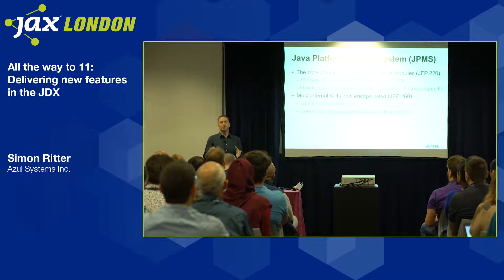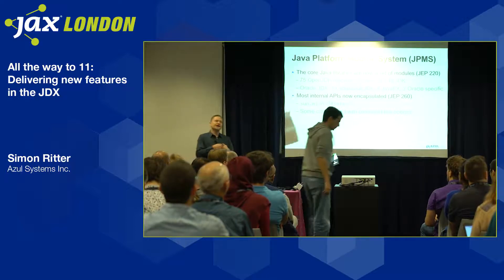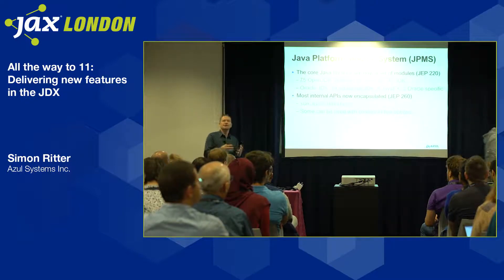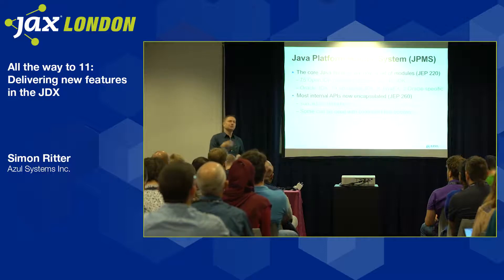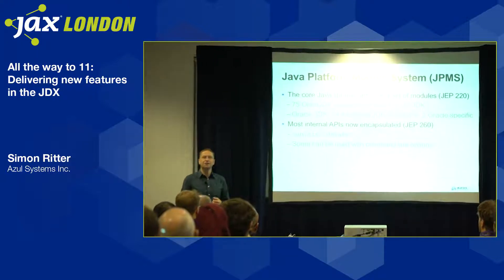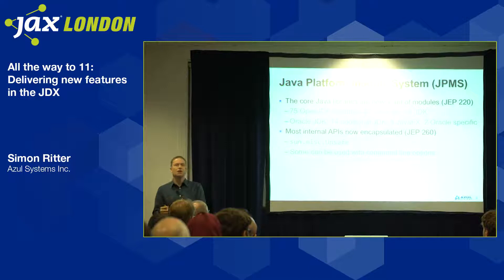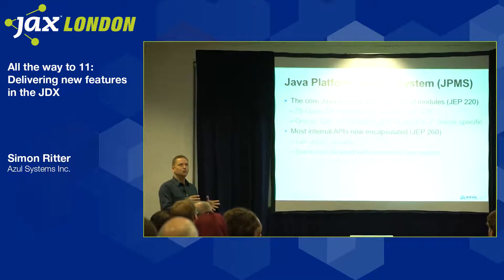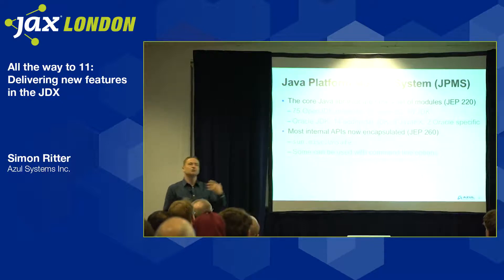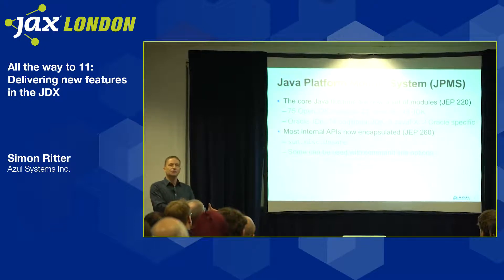It doesn't really make sense to have two monolithic jar files, because I can't believe anybody would use all 4,500 public APIs in a single application. Modularity was primarily about taking rt.jar and tools.jar and breaking them up into more manageable chunks — modules focused on desktop, SQL, the base functionality of Java, and so on — so you could select which modules you needed and only ship those with your runtime.